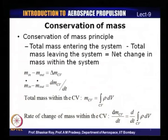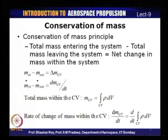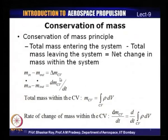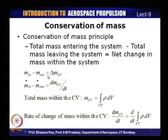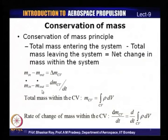In equation form: M_in minus M_out equals delta M_CV, where CV stands for the control volume. In rate form, the rate of mass flow in minus the rate of mass flow out equals dM_CV/dt. The total mass within the control volume M_CV is the integral of rho times dV, where rho is density and V is volume.